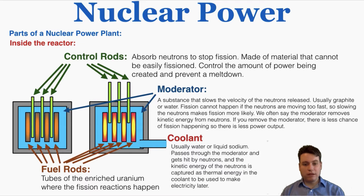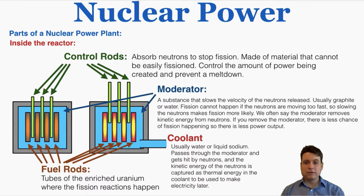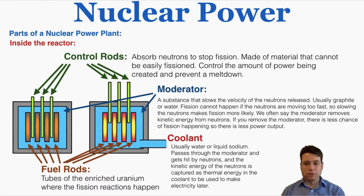These are the parts of a nuclear power plant. Inside the reactor, fuel rods of enriched uranium are kept at the center where fission reactions happen. Control rods are raised and lowered between the fuel rods — these absorb the neutrons bouncing around to stop fission from happening. If we want to shut down the reaction to prevent meltdown, we lower the control rods to absorb the neutrons. Control rods are made of materials that cannot themselves be easily fissioned, so they simply absorb the neutrons.